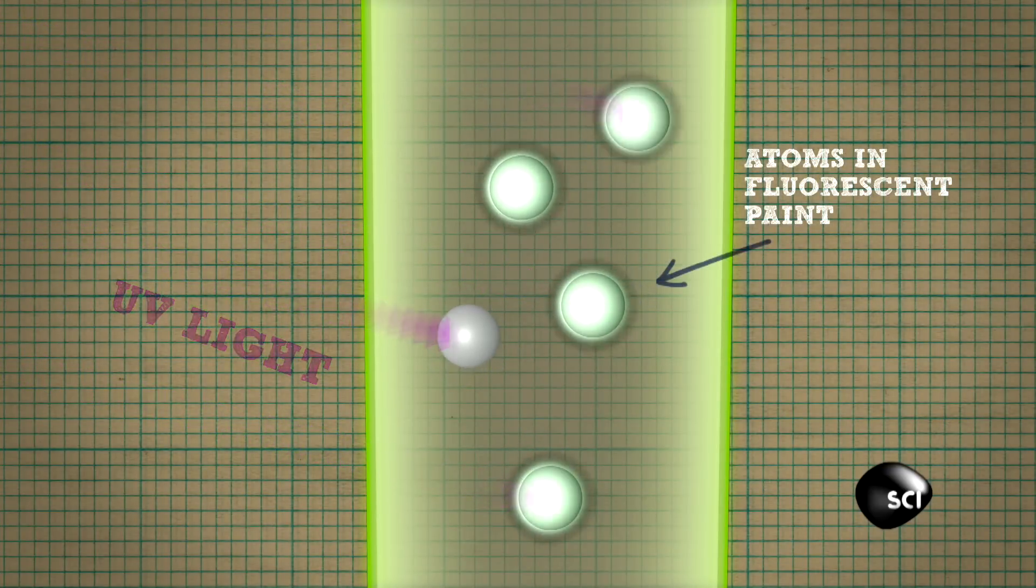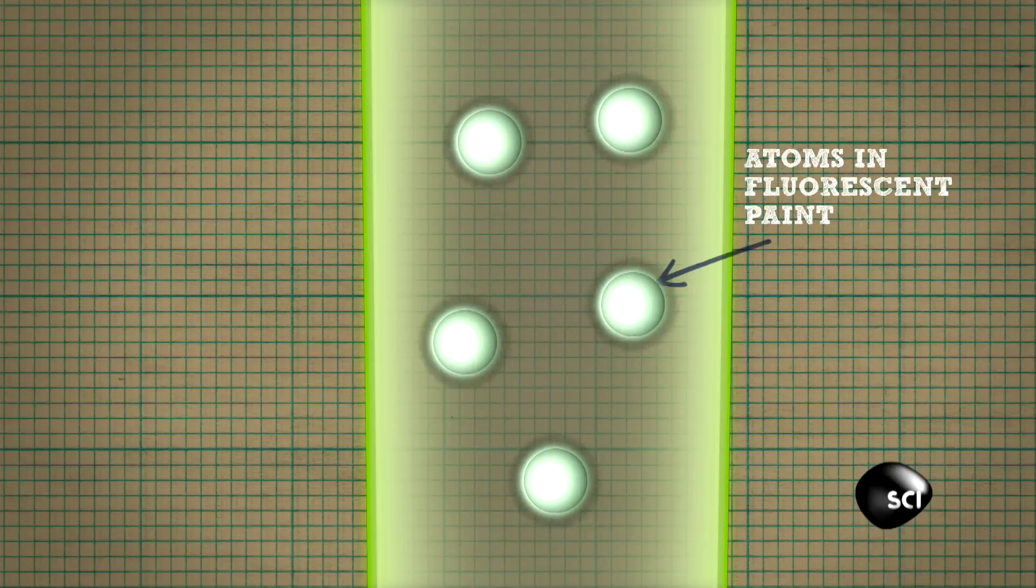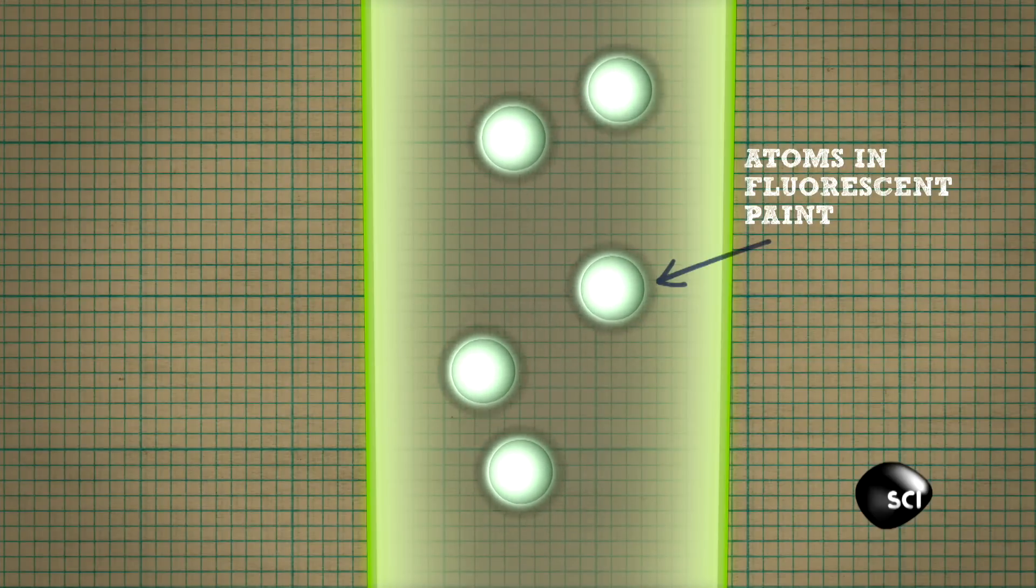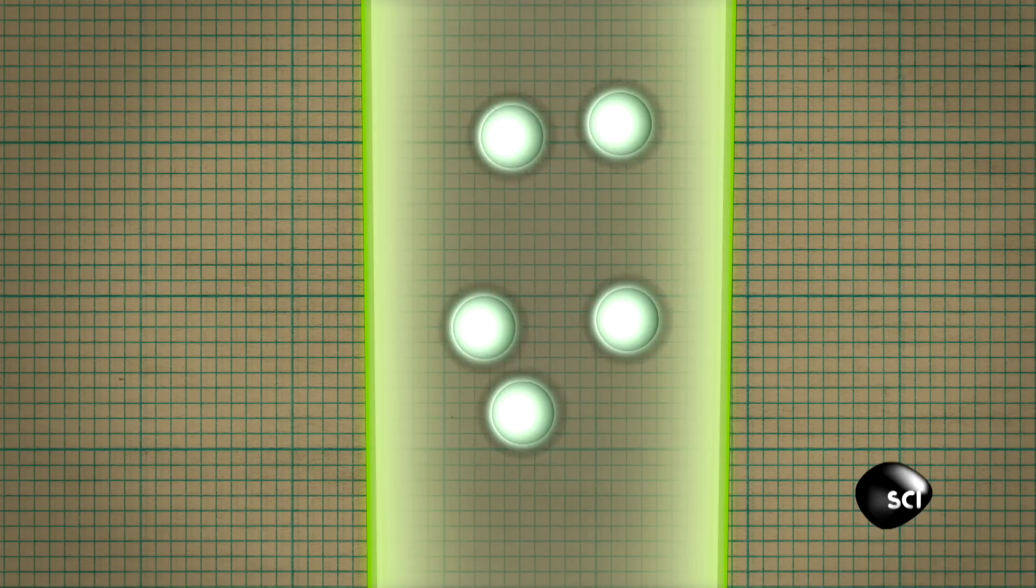In doing so, they get really excited, but that's not a really stable place for them to be, so they want to drop back down to a more relaxed energy level. They do this partly by vibrating and partly by emitting light at a lower energy.